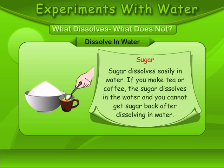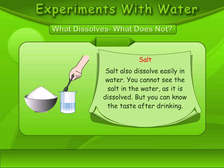Salt dissolves in water. Sugar also dissolves easily in water — if you make tea or coffee, the sugar dissolves in the water and you cannot get the sugar back after dissolving. Salt also dissolves easily in water, but you can know the taste after drinking.